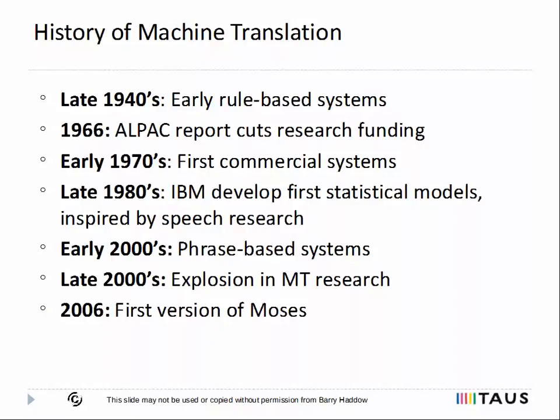Research, mainly on rule-based systems, continued throughout the 40s and 50s, and included famous demonstrations such as the IBM Georgetown experiment in 1956, which appears to show a successful machine translation. However, by the 60s, it was realized that these systems were very limited in scope, only being able to translate a couple of hundred words. And this culminated in the ALPAC report of 1966, in which the U.S. government decided that there wasn't much point continuing with research in machine translation, so this effectively killed research in the U.S.